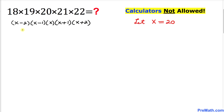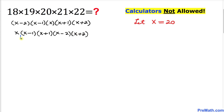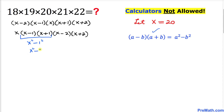So therefore I can write it as x, then times (x minus 1)(x plus 1), and likewise (x minus 2)(x plus 2). Now let's focus on these two factors: x minus 1 and x plus 1. We are going to use the difference of squares formula, so therefore this part can be written as x squared minus 1.